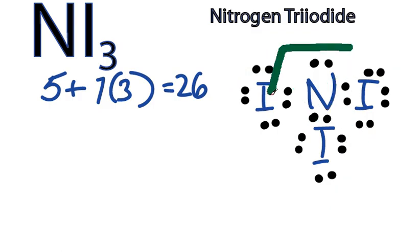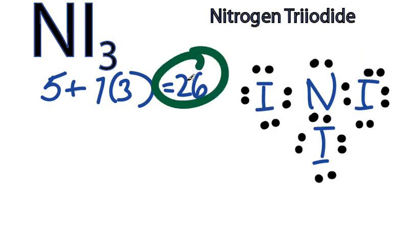And then in the center, the Nitrogen, also has 8 valence electrons. So those octets are satisfied. And we've used all 26 valence electrons.